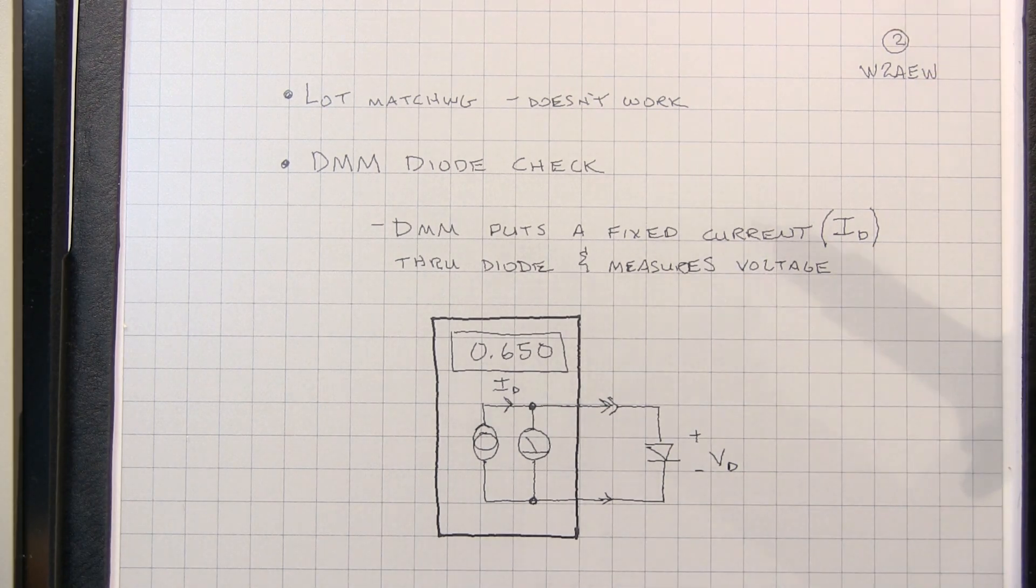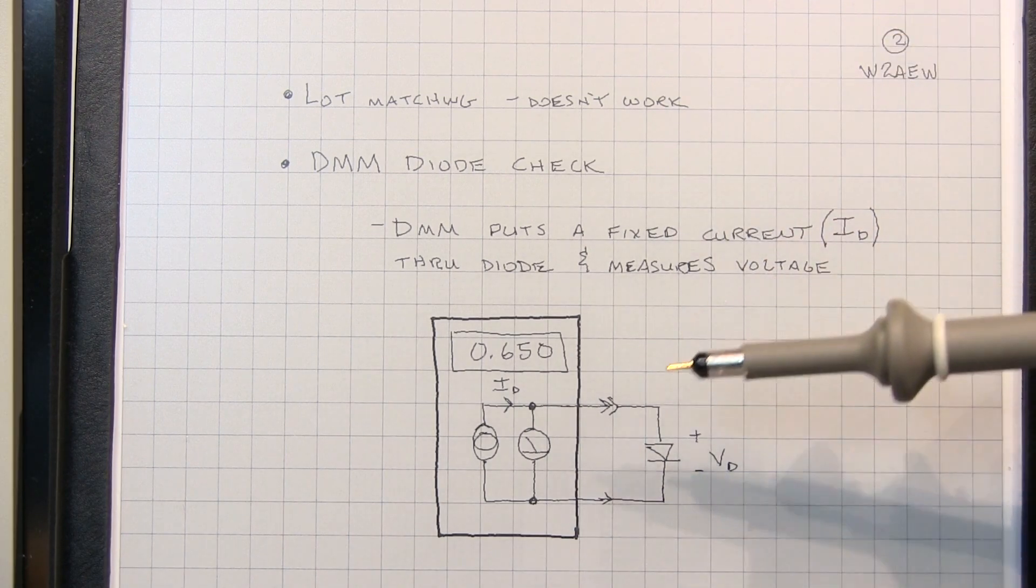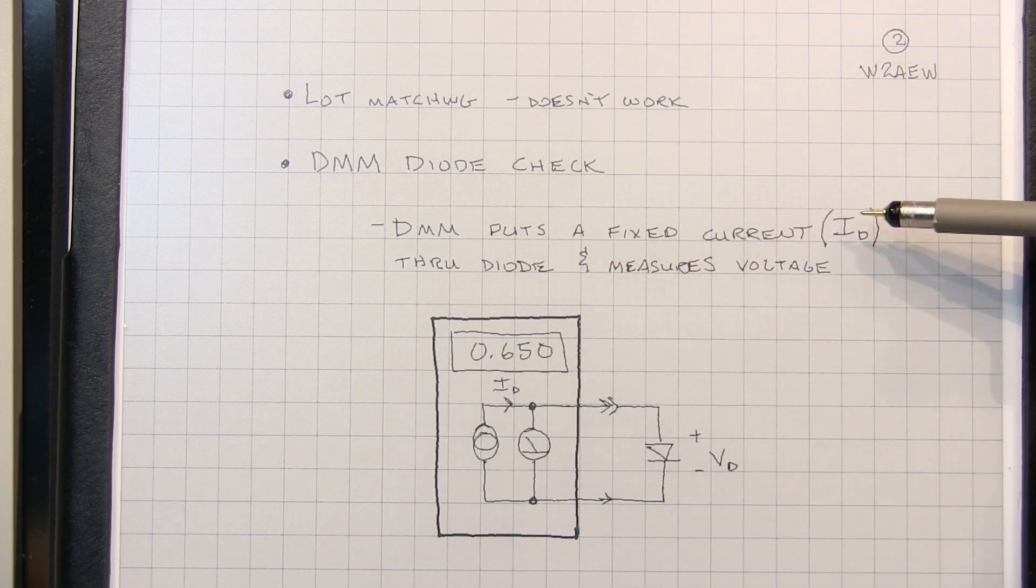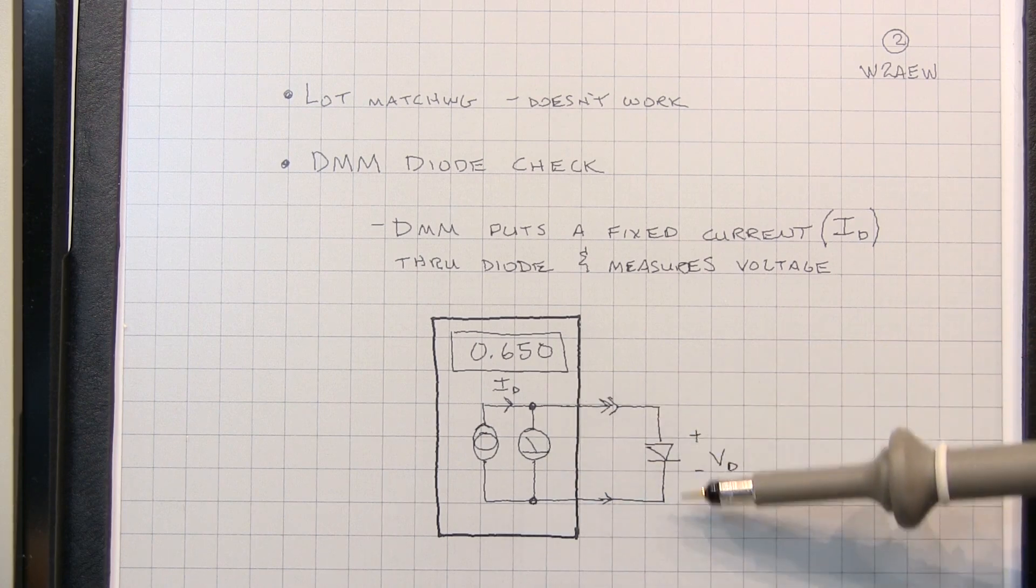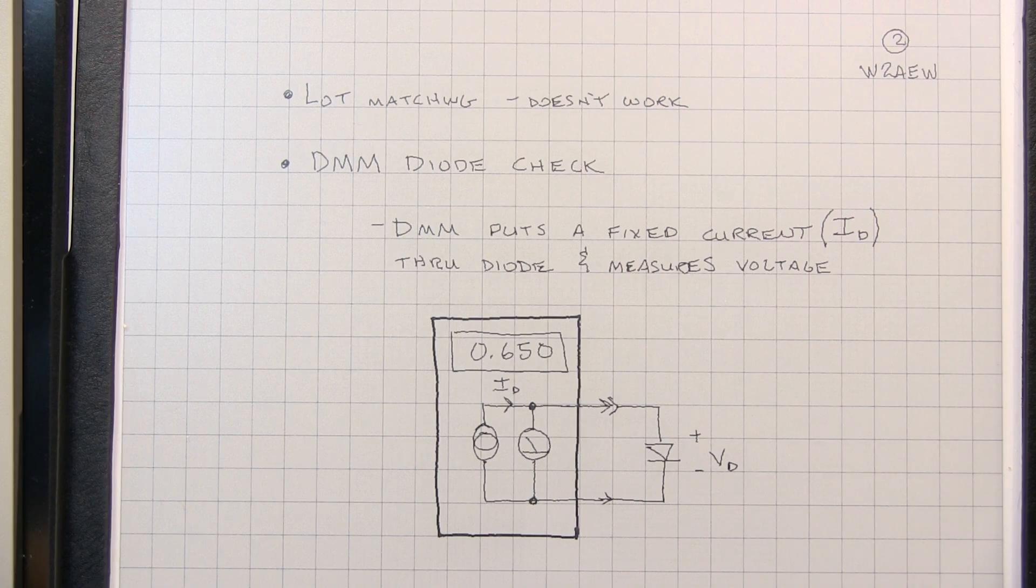The next easiest one and simplest one is to use the DMM diode check, and in this case the DMM puts a fixed amount of current through the diode and measures the voltage across it. And this works pretty well, and it's a very simple thing to set up.